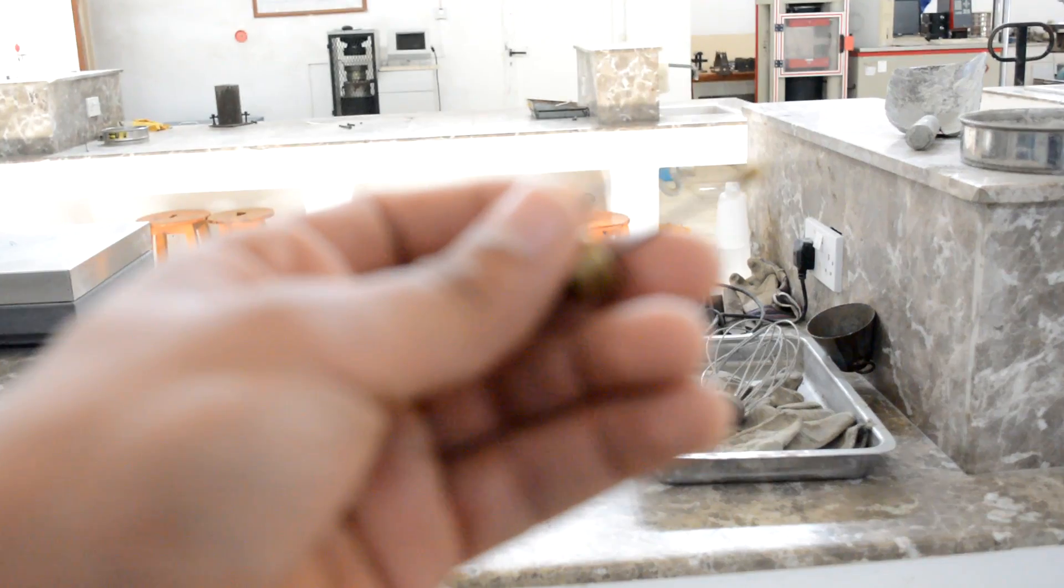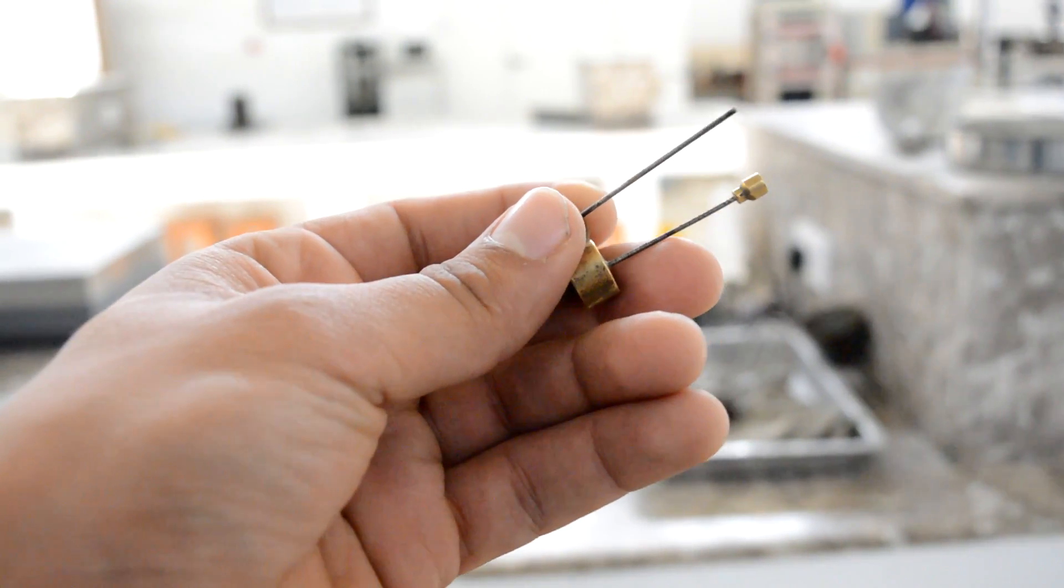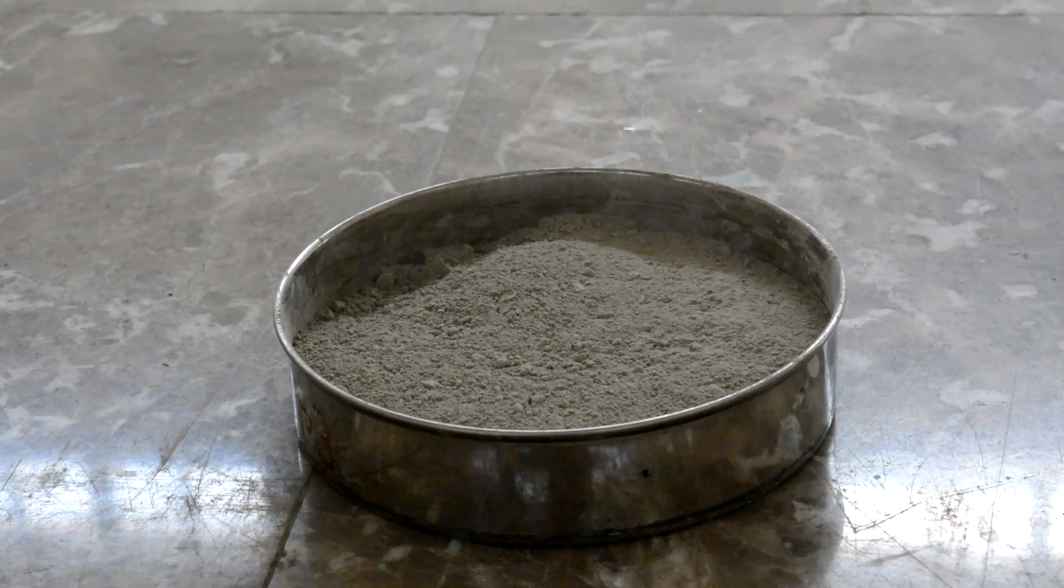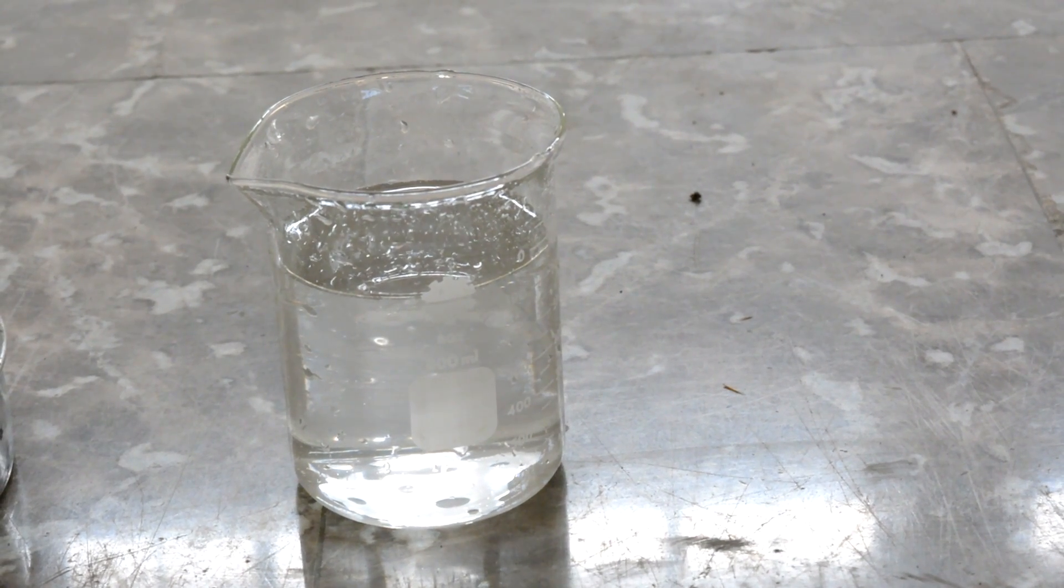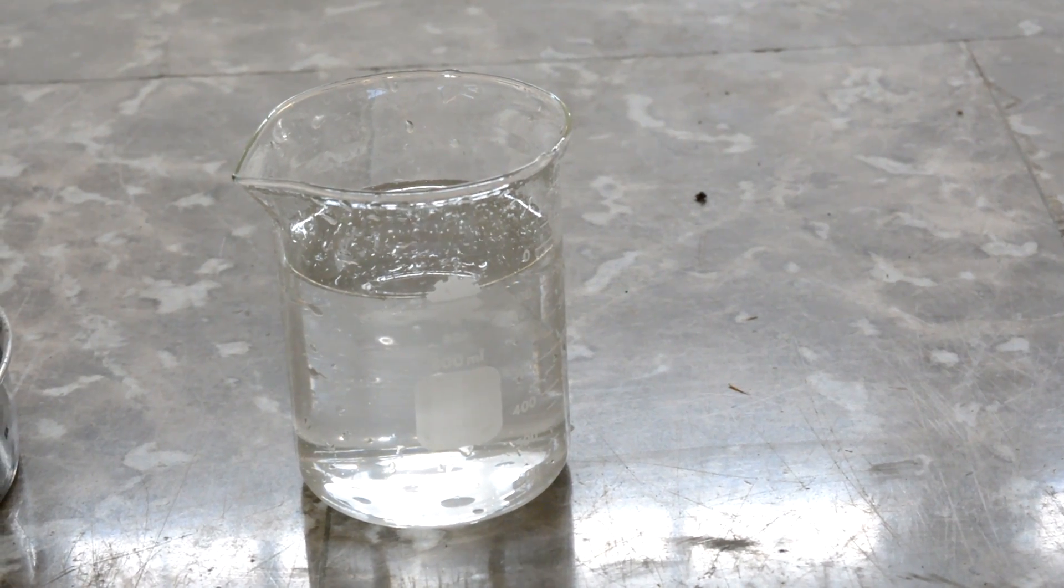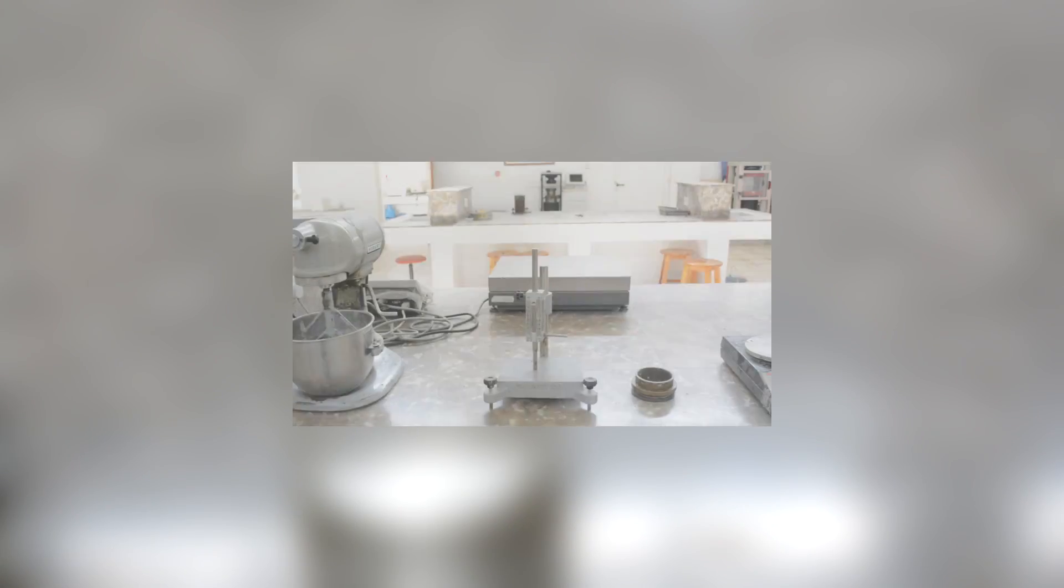The Vicat apparatus, two needles (thick and thin), a mixer, a timer, 650 grams of cement, and a defined amount of water which has been determined by the normal consistency test, which we covered in a previous video.